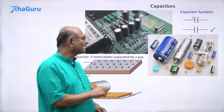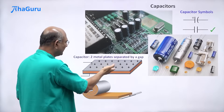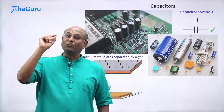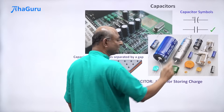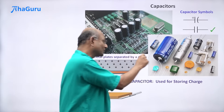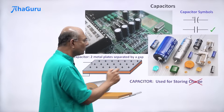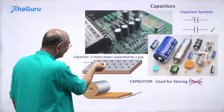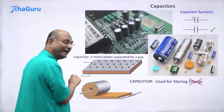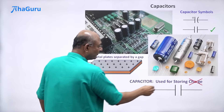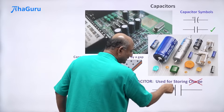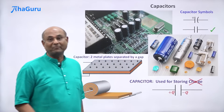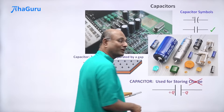Now, what is a capacitor really used for? The most common answer is that it is used for storing charge. Unfortunately, this answer is wrong. Because if you take a capacitor, you are taking electrons from one plate and putting them on the other. So one plate becomes plus Q and the other becomes minus Q. The total charge on the capacitor is zero. Net charge on a capacitor is always zero — always plus Q minus Q.